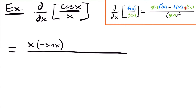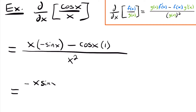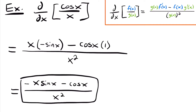The derivative of cosine is negative sine. Then we subtract the original numerator function times the derivative of the denominator — so we have cosine x multiplied by the derivative of x, which is 1. This is all divided by the denominator function squared, which is x squared. Simplifying, we get negative x times sine x minus cosine x, all divided by x squared. That is our final answer.